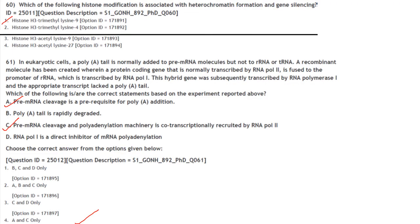Which histone modification is associated with heterochromatin formation and gene silencing? Histone methylation plays an important role in assembly of the heterochromatin mechanism. Answer is option 1 — histone H3 trimethyl lysine 9 (H3K9me3).